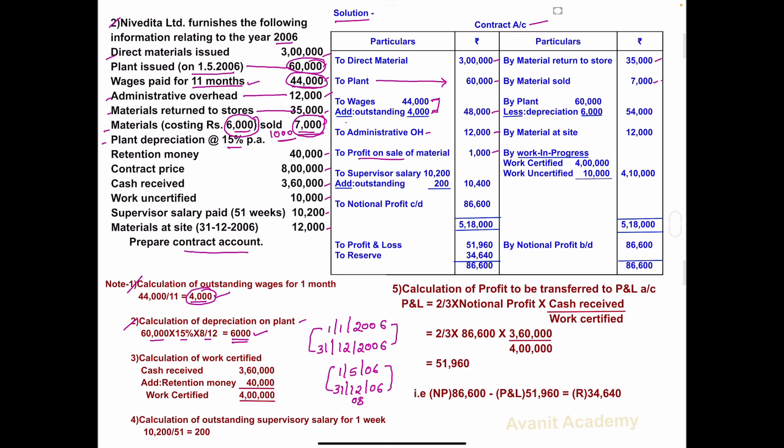This is the depreciation amount: 6,000. In the solution, write on the credit side: by plant — value 60,000, less depreciation 6,000, giving 54,000.